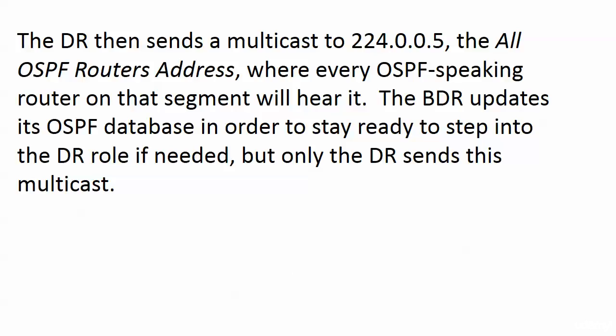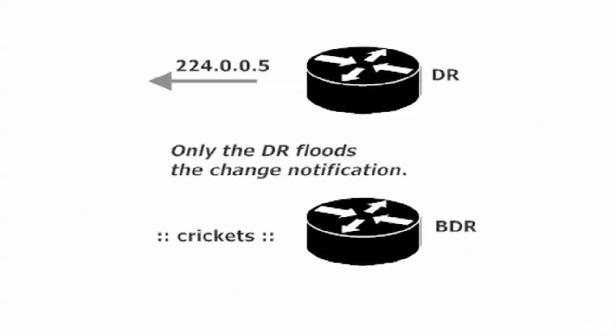The DR then multicasts to 224.0.0.5, the all OSPF routers address - that's why hellos are sent to 224.0.0.5, because all OSPF routers listen to it. If only the DR sends that multicast out, why does the BDR get it so fast? Because we always want the BDR to be able to step into the virtual shoes of the DR at any moment if that DR goes down. The BDR gets the update at the same time the DR does, updates its own OSPF database, and is ready to go. But only the DR sends the multicast to 224.0.0.5.